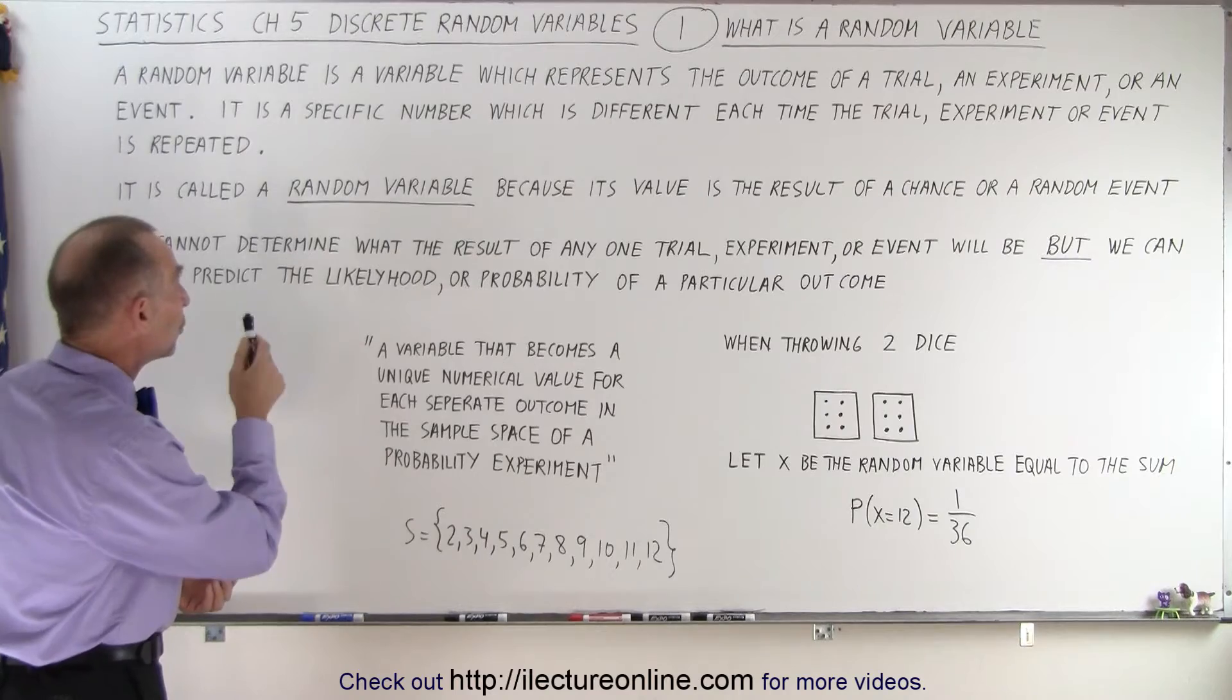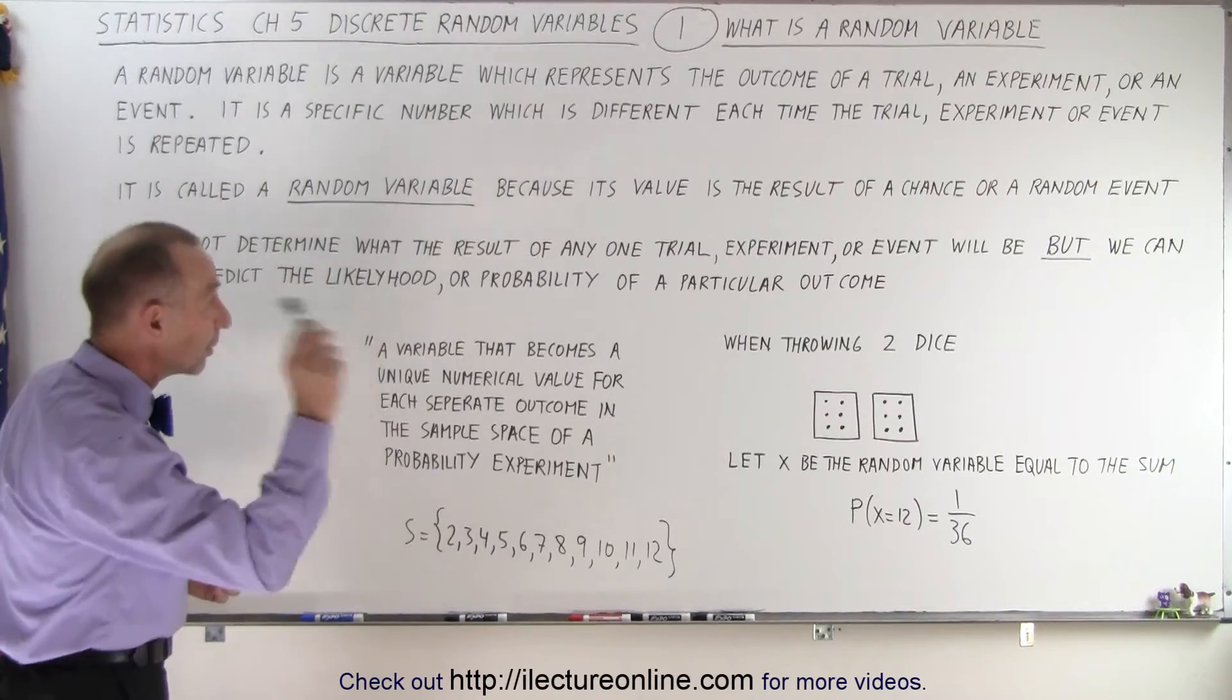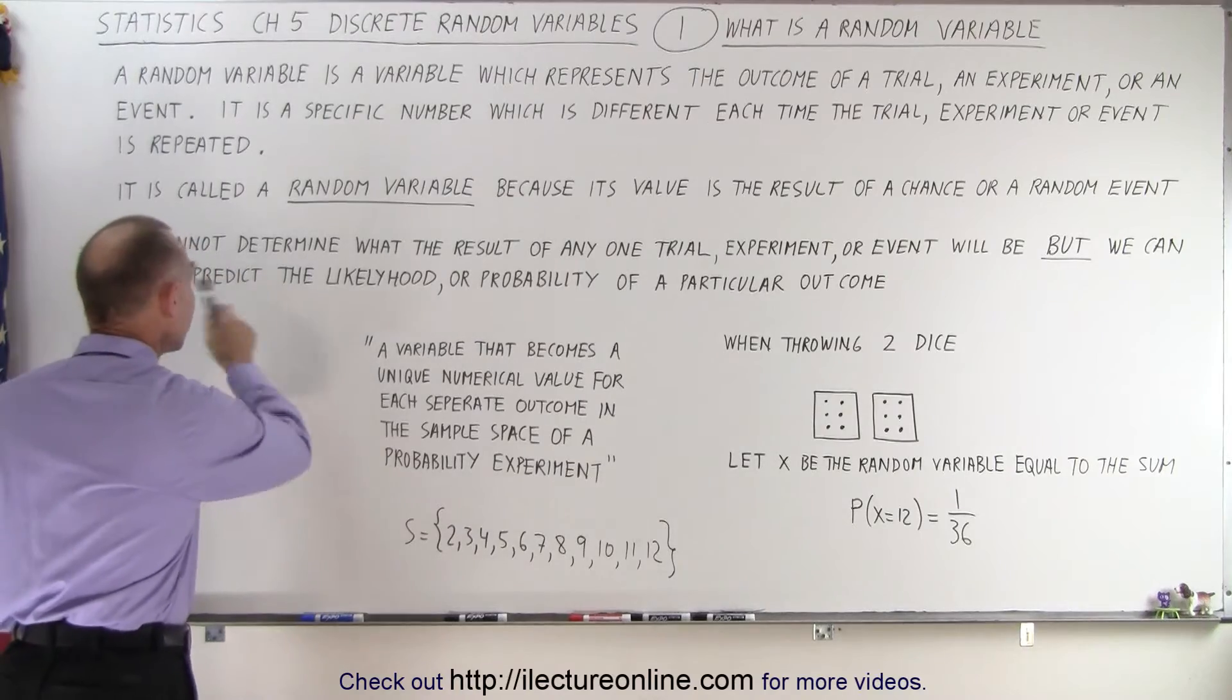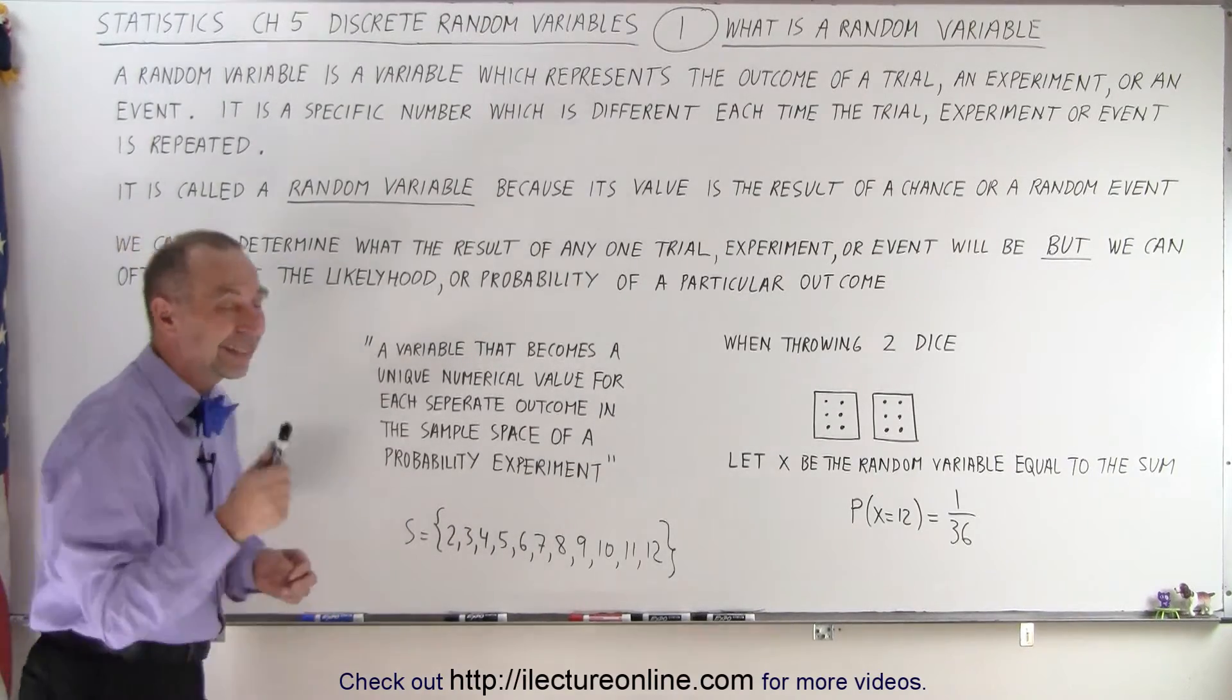We cannot determine what the result of any one trial, experiment, or event will be, but we can often predict the likelihood or probability of a particular outcome.